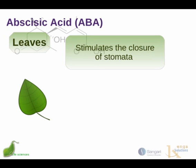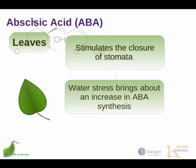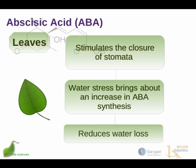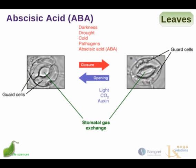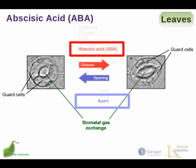In the leaves, abscisic acid is responsible for the closure of the stomata. Water stress therefore brings about an increase in abscisic acid synthesis, and this reduces water loss from the leaves. Abscisic acid is one of the things that affects the closing of the stomata, while auxin plays a role in the opening of the stomata. There is thus an antagonistic relationship between abscisic acid and auxins in terms of their effect on the opening and closing of the stomata.